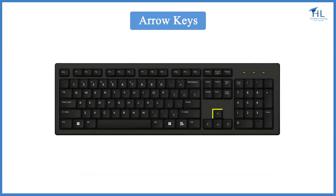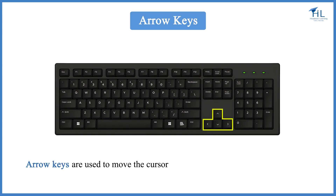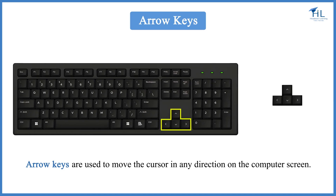This set of four keys is called Arrow keys or Cursor keys. Arrow keys are used to move the cursor in any direction on the computer screen. The four Arrow keys are Up, Down, Left, and Right.